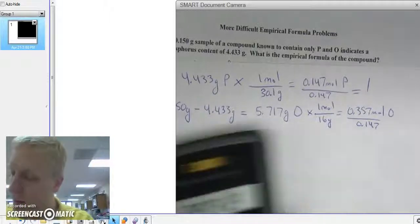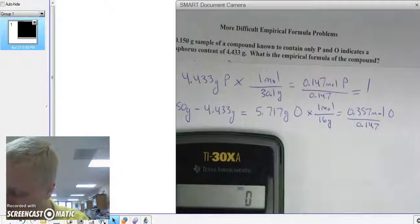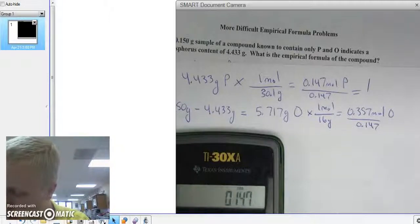Phosphorus, I get 1, and when I type in 0.357 divided by 0.147, I get about 2.43.